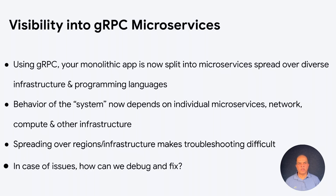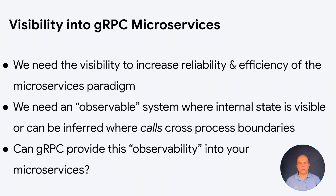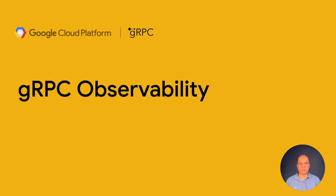For example, if something breaks in your complex mesh or is performing poorly, how do you figure out where the problem is? And how do you fix the problem? How do we get back what we lost using the microservices paradigm? Is there any way the infrastructure or the software components can provide the required visibility? This is where gRPC observability comes in.